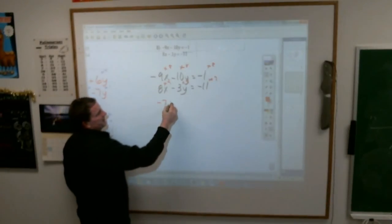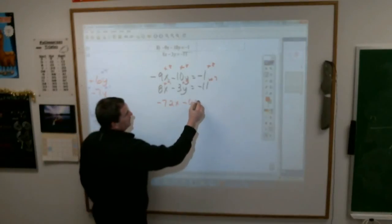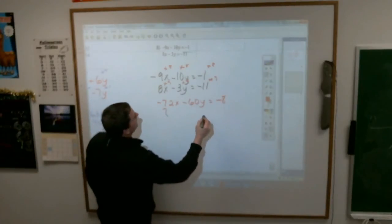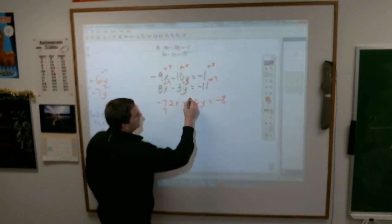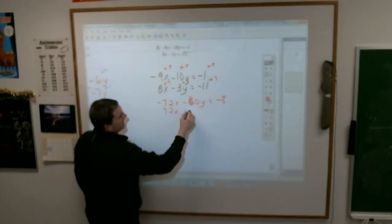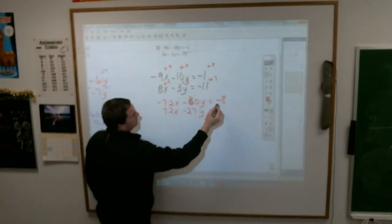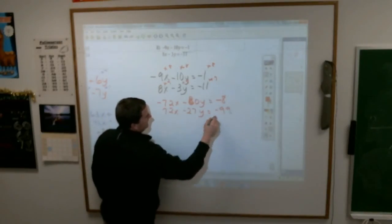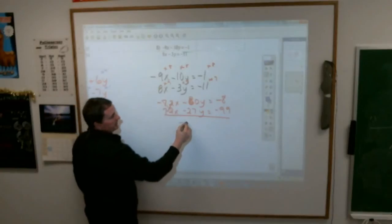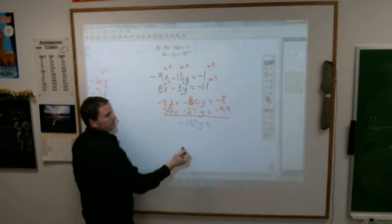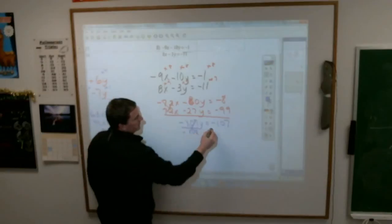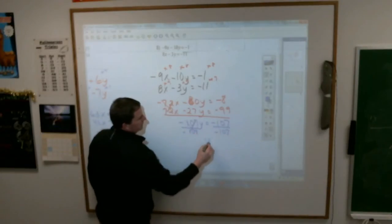All right. So you end up with negative 72x minus 80y equals negative 80. No, 80y. Yeah, 80y. Oh, I don't know what I was doing. Sorry. 80y. This becomes positive 72x minus 27y equals negative 99. And the x's go away. Negative 80, negative 27 is negative 107y equals, oh look, negative 107. How about that? Divide by negative 107. Divide by negative 107. Y then equals 1.